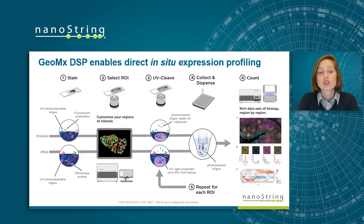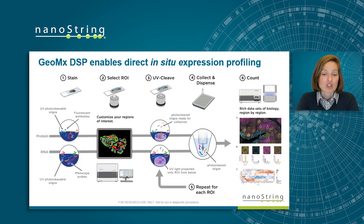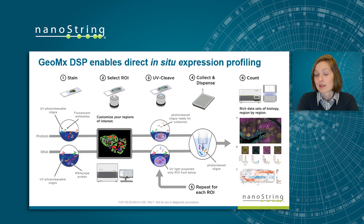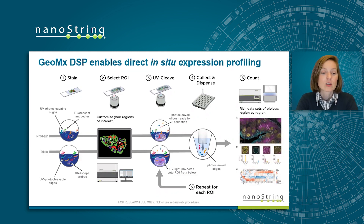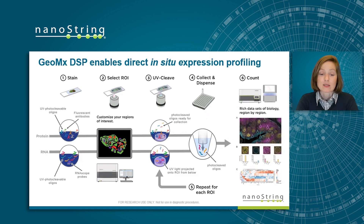I'd like to go over how Nanostring's GeoMix Digital Spatial Profiler enables direct in situ gene expression profiling. You can take FFPE or fresh frozen tissues mounted on slides and hybridize them with UV photocleavable oligonucleotides and stain them with fluorescent antibodies, enabling you to profile protein or RNA expression. Today we will focus on the RNA assay. After staining, the GeoMix DSP images your tissue and you can select regions of interest, or ROIs, based on your tissue morphology, staining, experimental design, and scientific questions.